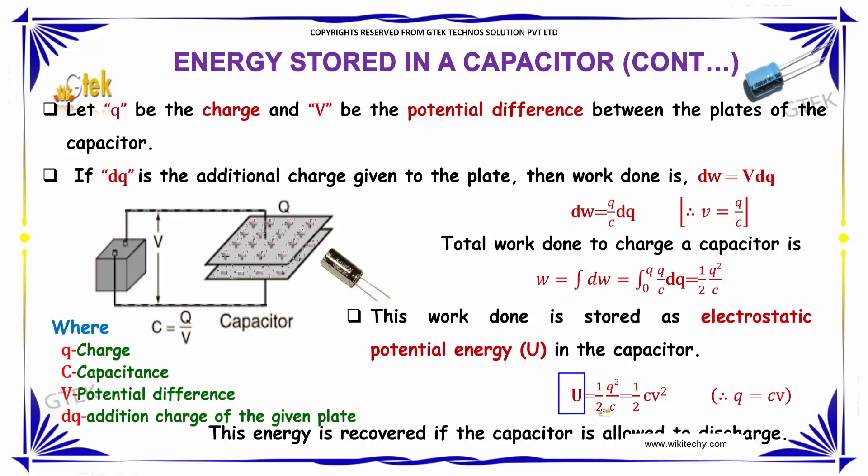That is 1 by 2 q square divided by C, where we can substitute the value for q, that is charge CV. Now the term will become electrostatic potential energy equals 1 by 2 CV square. This is the energy that is recovered if the capacitor is allowed to discharge.